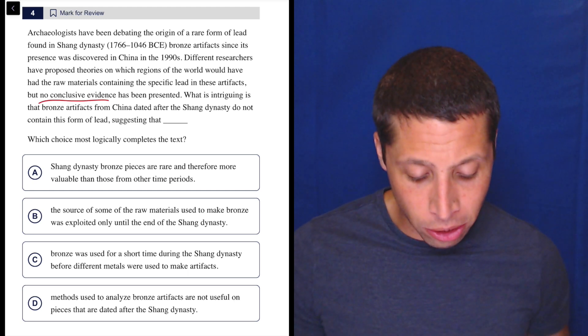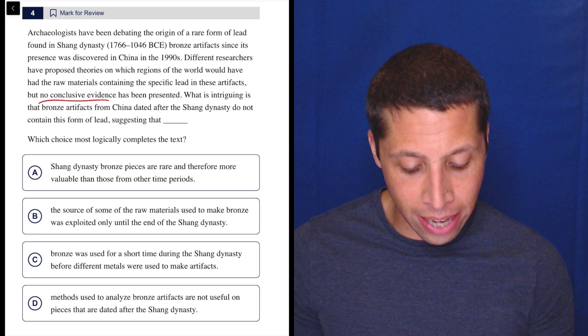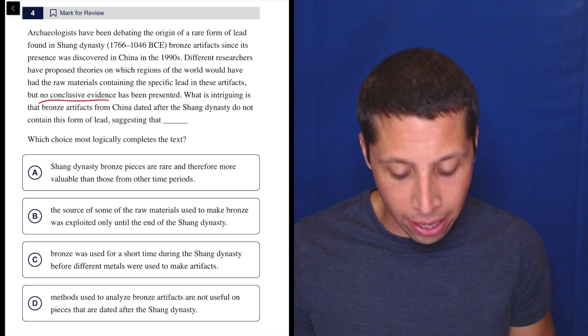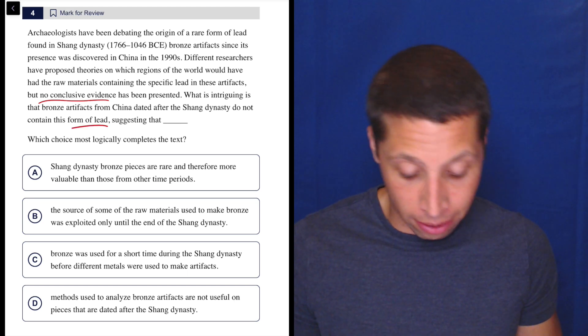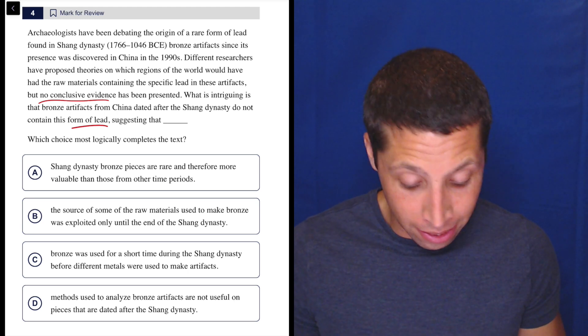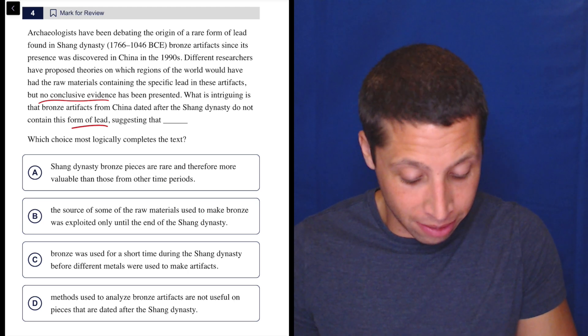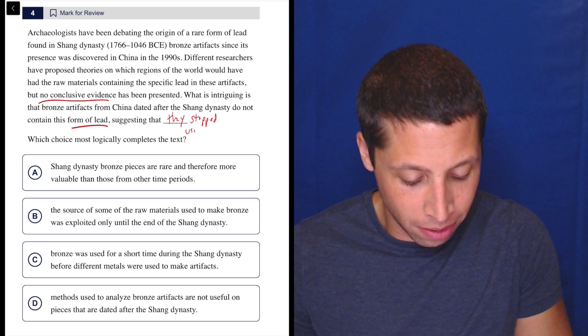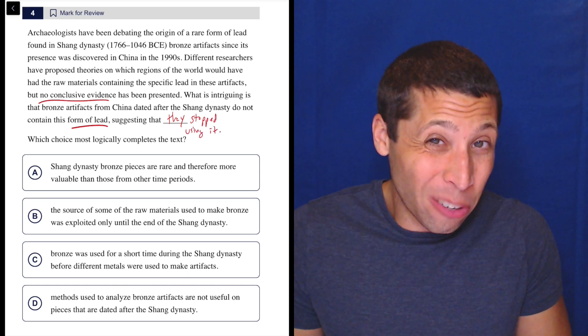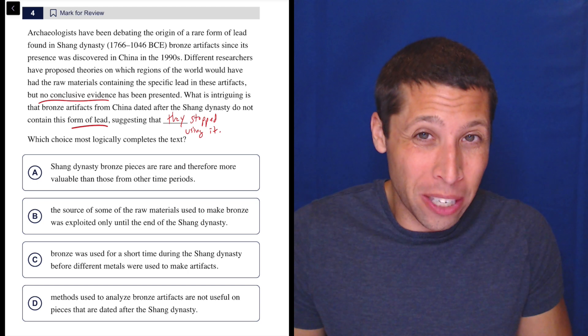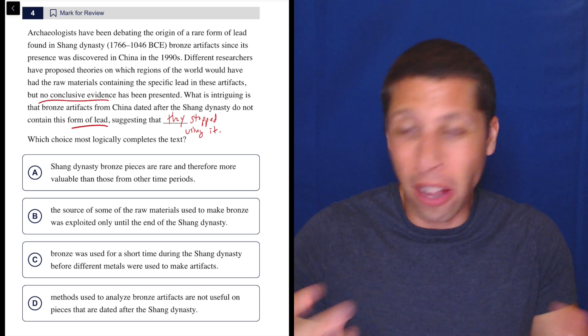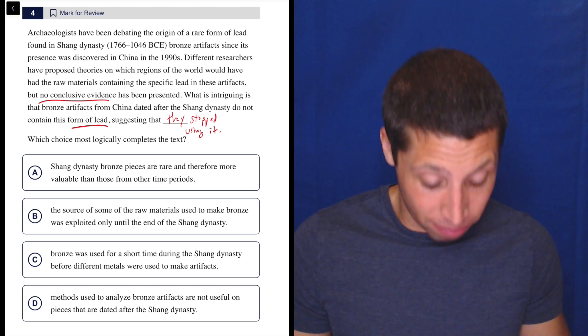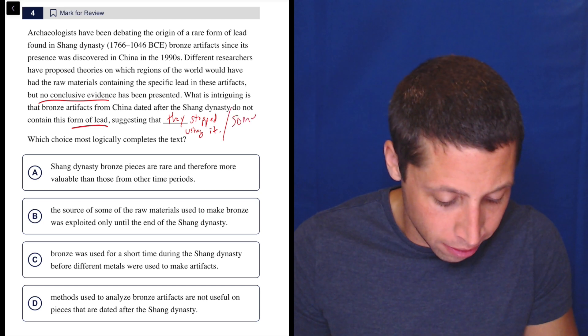No conclusive evidence. What is intriguing is that bronze artifacts from China dated after the Shang Dynasty do not contain this form of lead, but suggesting that... okay, I don't know, something like they stopped using it? Maybe that, or something about like they only used it, you know, this other part of the world stopped mining it or whatever? Something changed, right? How about that? Something changed.